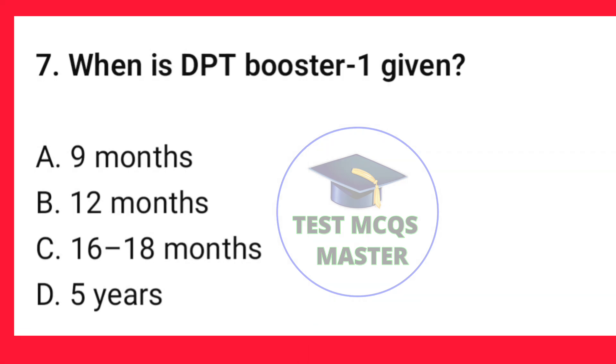Question number 7. When is DPT booster 1 given? The correct option is C — 16 up to 18 months.